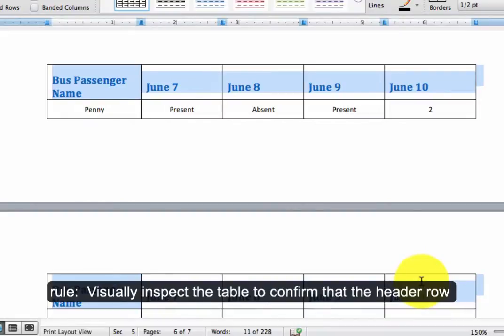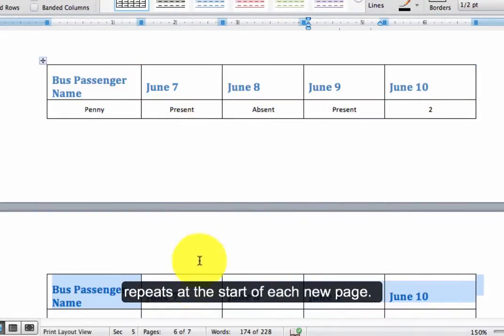Here's how to test for this rule. Visually inspect the table to confirm that the header row repeats at the start of each new page.